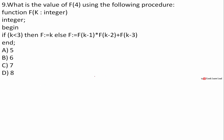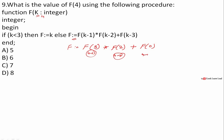What is the value of f(4) using the following procedure? If k < 3, then f = k; else f = f(k-1) * f(k-2) + f(k-3). For f(4): k is 4, which is greater than 3, so f(4) = f(3) * f(2) + f(1). f(1) = 1, f(2) = 2 since k < 3. For f(3): k equals 3, so f(3) = f(2) * f(1) + f(0).